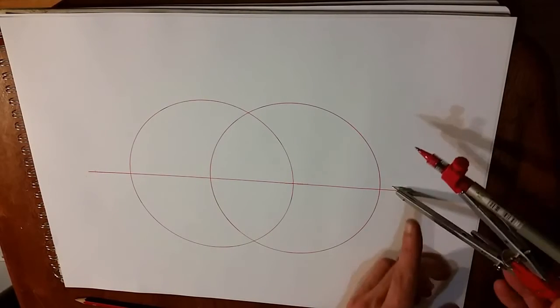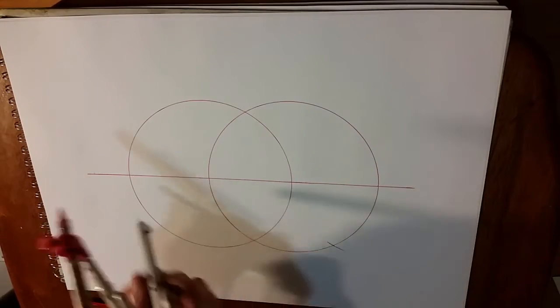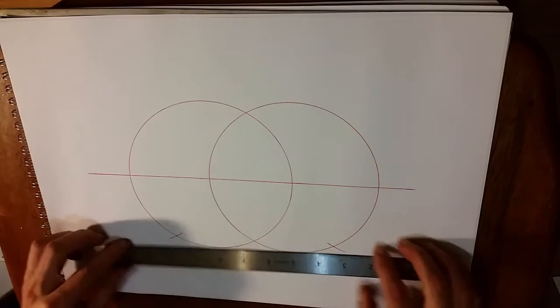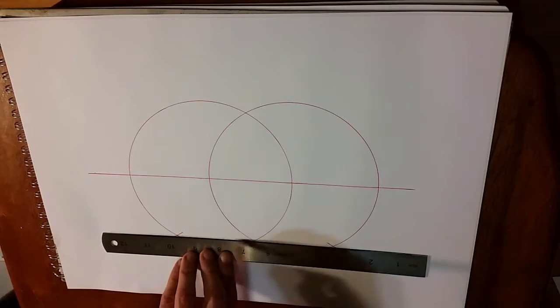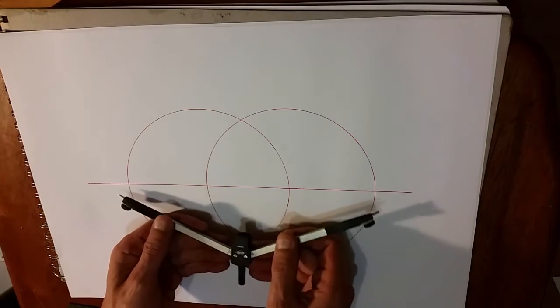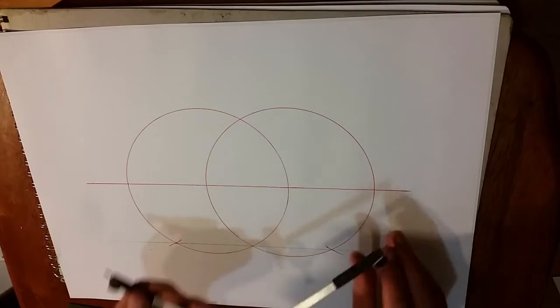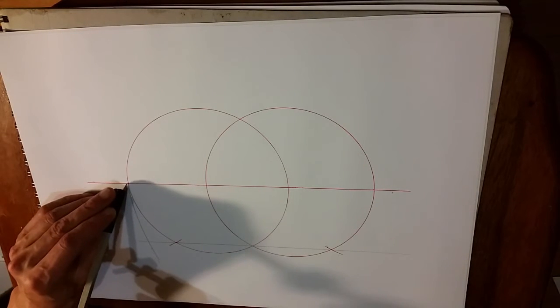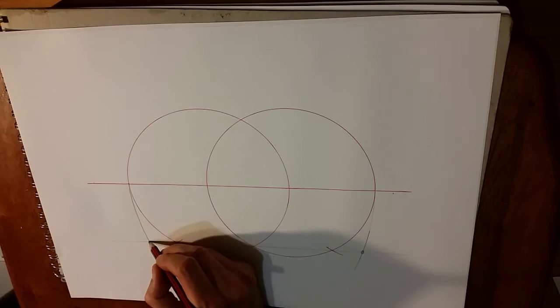I've drawn a Vesica Pisces now without changing the size of the compass. I'm just going to mark one point. Now we're going to draw a construction line which will form the base of the great pyramid of this particular geometry. And now we need to readjust and set it to the width of the entire base. I'm going to draw an arc down and put it on the other side. These will be the corners and the peak.